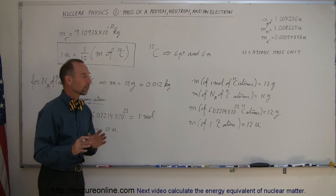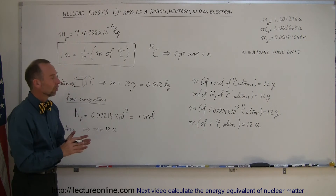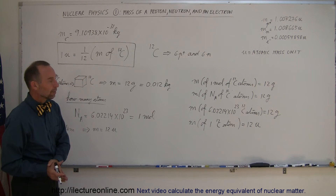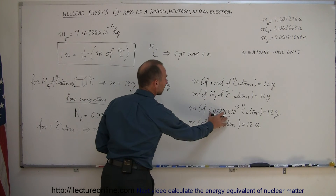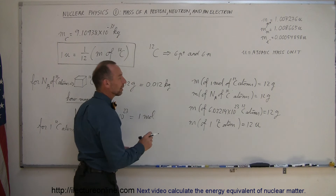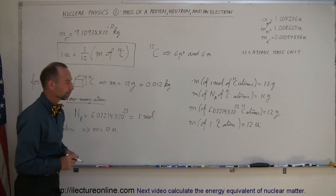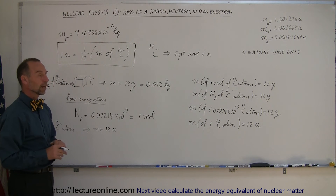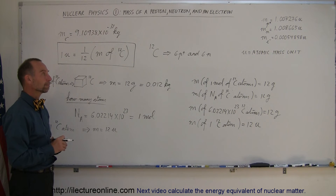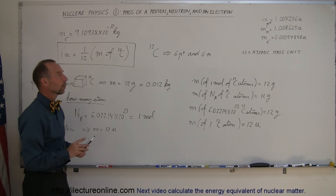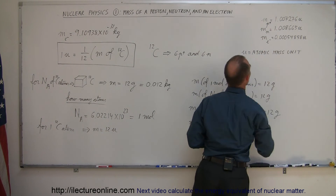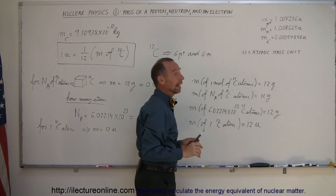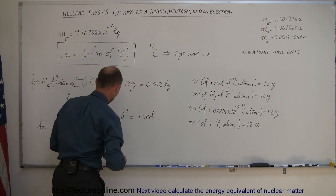So if you want to convert from atomic mass units to kilograms, you have to either multiply or divide by Avogadro's number. Now let's figure out the relationship between the mass of a proton in atomic mass units and the mass of a proton in kilograms.